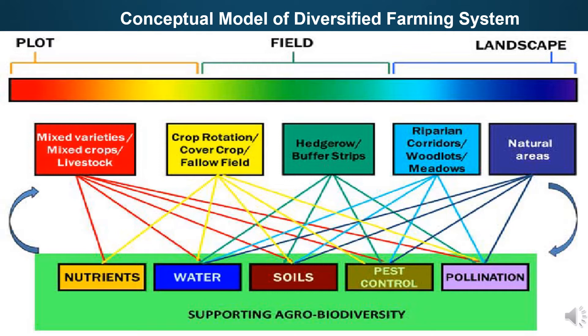There are also uses of crop rotations, cover cropping, green manuring or fallowing, which are all examples of practices that vary the planting in a given field over time, shown here in the yellow box. There are also planting of hedgerows or grassy buffer strips around crops, shown here in light green color.